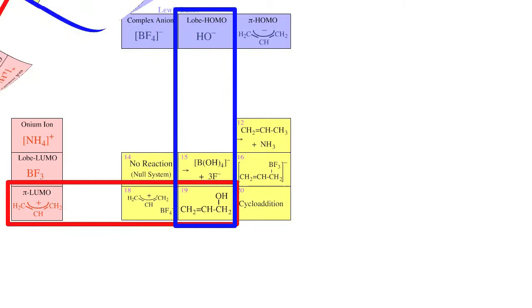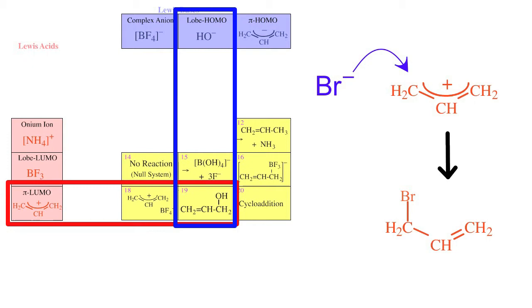Lobe HOMO Lewis bases interact with pi LUMO Lewis acids such as the allyl cation. Complexation takes place to form allyl bromide.